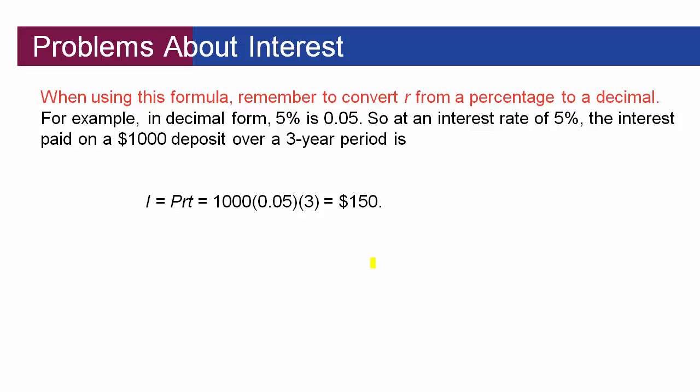So with this case if we had a $1,000 deposit for three years at 5% interest we would plug it into this formula and we would get $150 because that's simple interest. We're basically just getting 5% of that $1,000 each year.